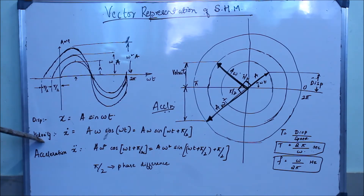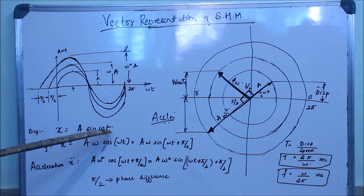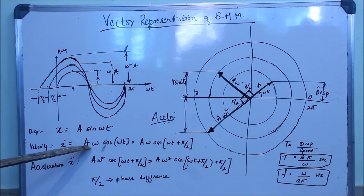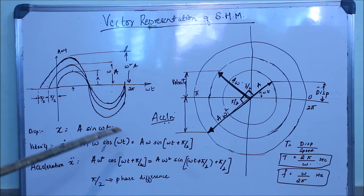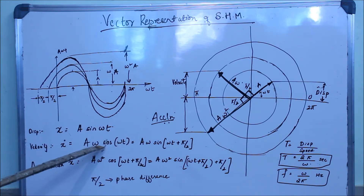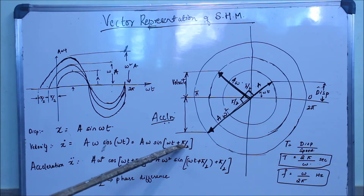For the velocity vector, you differentiate the displacement equation with respect to time. Differentiating x = A sin(ωt) gives ẋ = Aω cos(ωt). Using the trigonometric identity that sin(90° + θ) = cos(θ), we replace cos(ωt) with sin(π/2 + ωt).